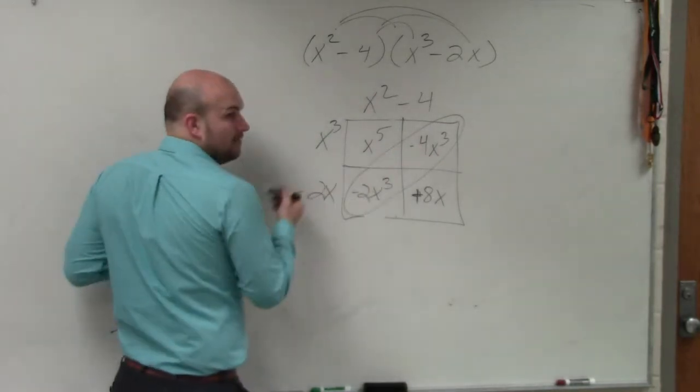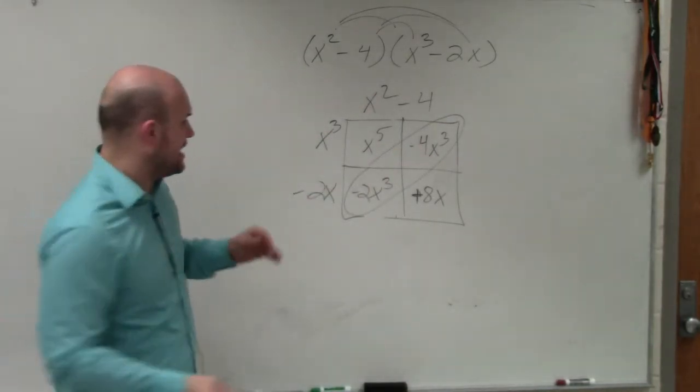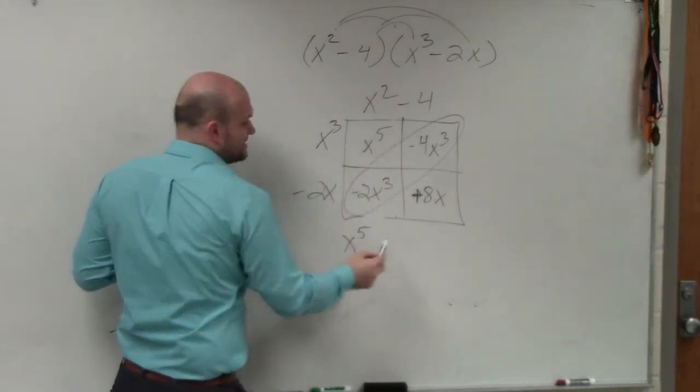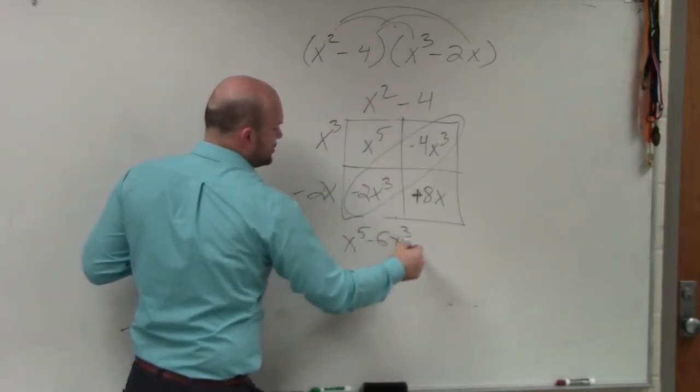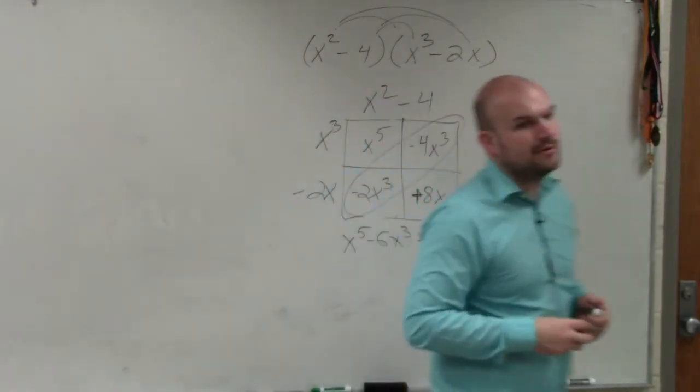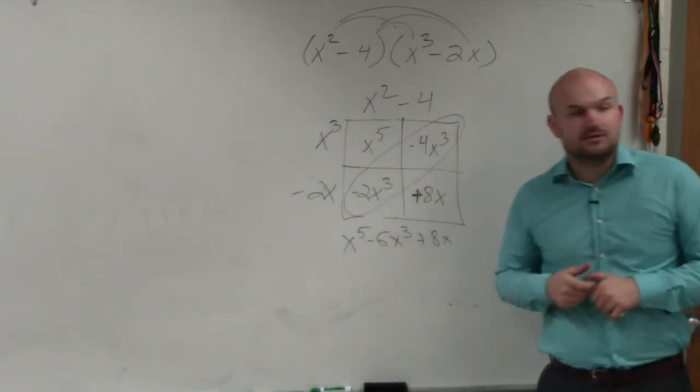So now when I'm rewriting my answer, I have x to the fifth. I can just combine these together, which is negative 6x cubed plus 8x. And that will be your final answer.